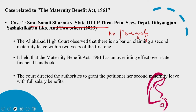The court directed the authorities to grant Sharma her second maternity leave with full salary benefits, quashing the order rejecting her application. The judgment in Srimadhi Sonali Sharma versus State of UP 2023 categorically reinforces the primacy of the Maternity Benefit Act 1961 over any state-level regulations. It establishes that an employee's right to maternity leave is not limited by the time gap between successive pregnancies as long as statutory conditions are met.